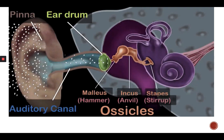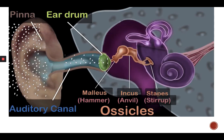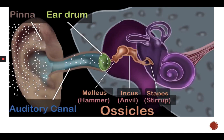That brings us to the inner ear. The inner ear consists of a bony structure. The top part of this structure has three semi-circular rings which help us maintain balance when walking or moving — they're not involved in hearing. The part involved in hearing is the snail-like structure called the cochlea.